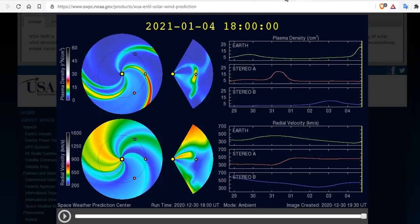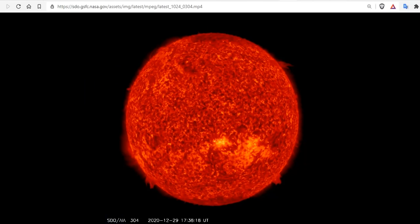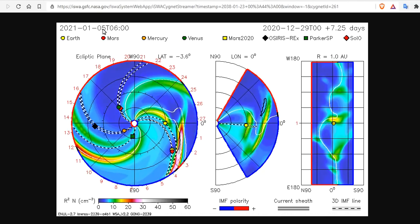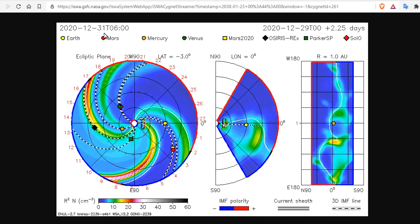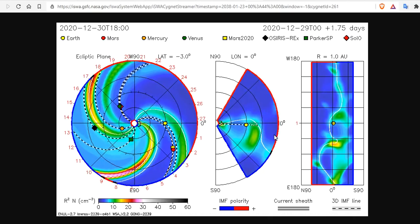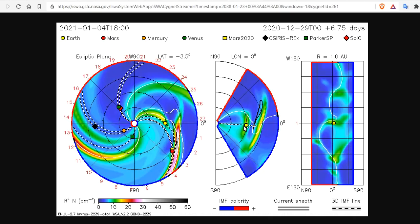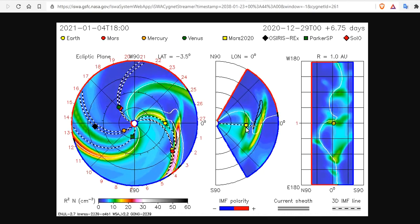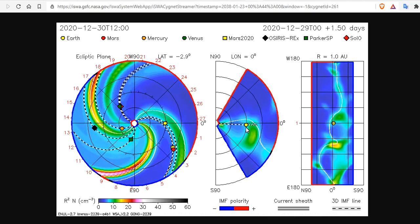This CME is going to be coming in just a few days. And at the same time on the fourth here, we have a particularly strong coronal hole stream that will also be impacting. So if we come over to ISWA, there's the shot. It shows it's going to hit Earth right there on the third, third to the fourth.